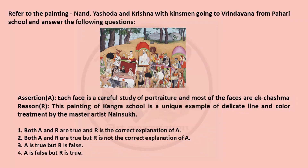Referring to the same painting: Assertion says each face is a careful study of portraiture and most of the faces are in Ek Chashma — that is, only one eye is visible and people are in profile poses. This statement is true. The Reason given is: the painting of Kangra school is a unique example of delicate line and color treatment by the master artist Nain Sukh. This statement is true, but it is not related to the assertion statement. So our answer is 2 — both A and R are true, but R is not the correct explanation of A.